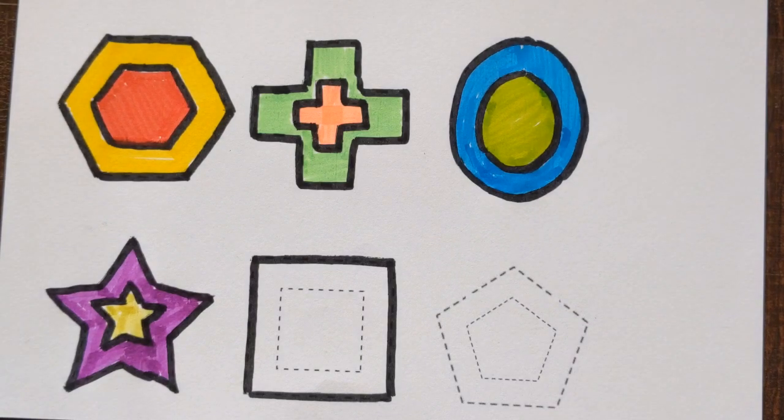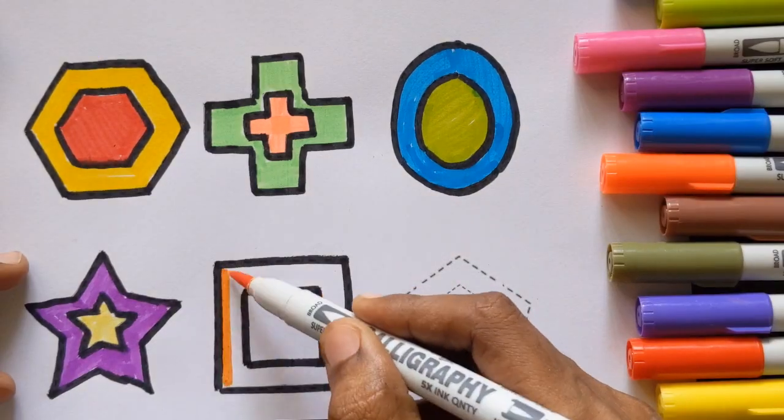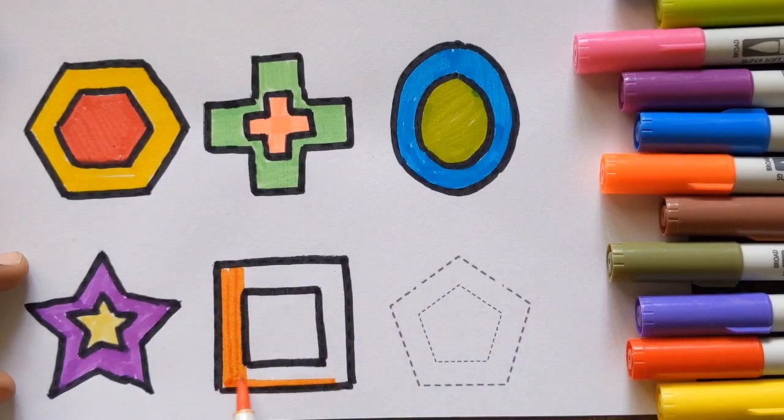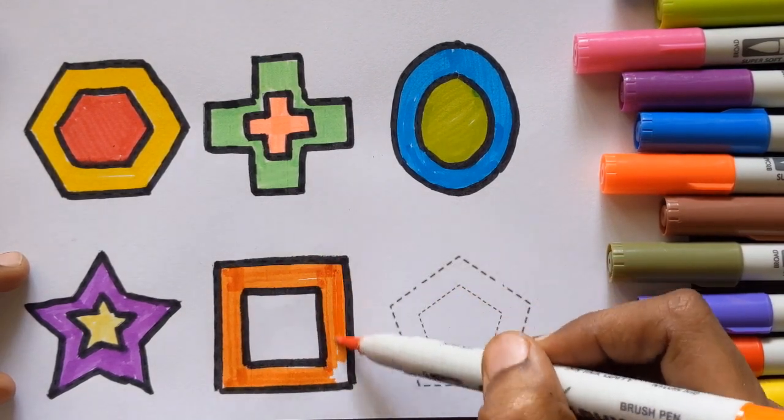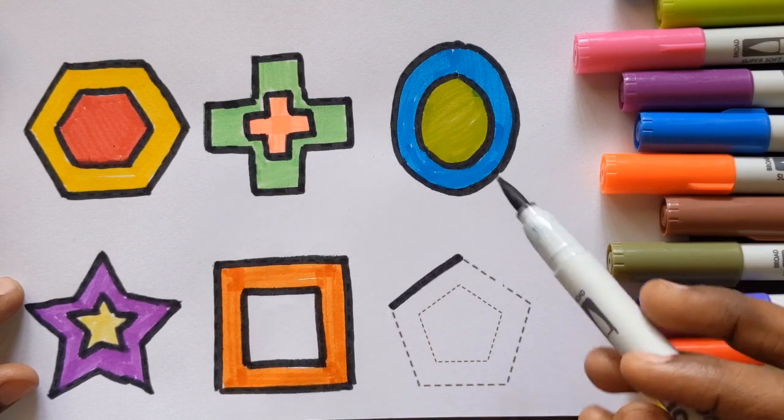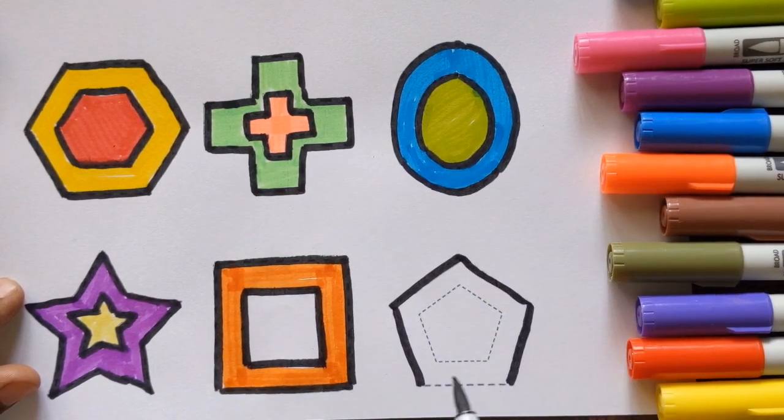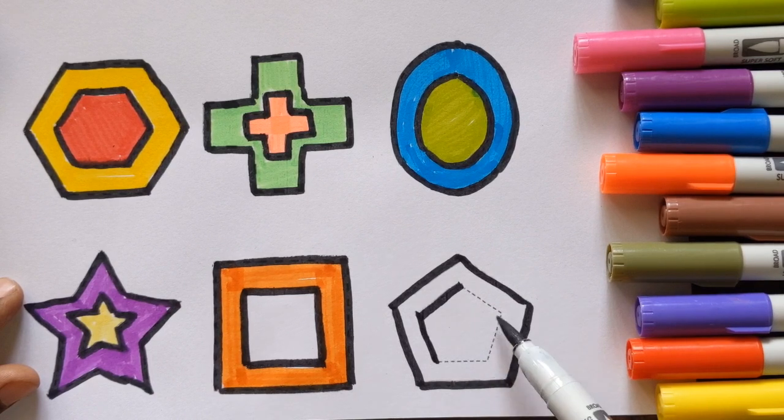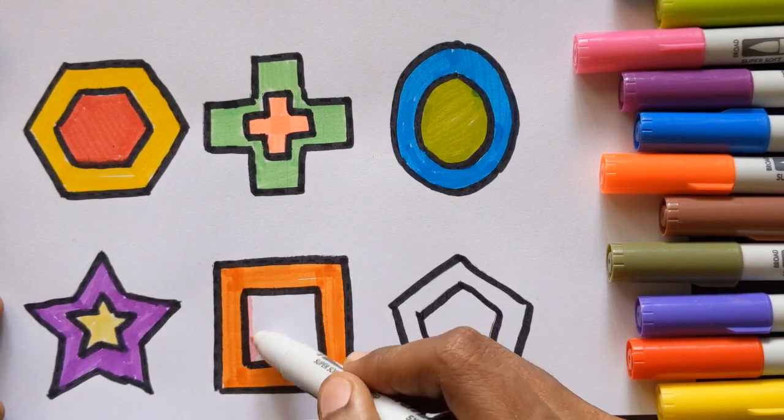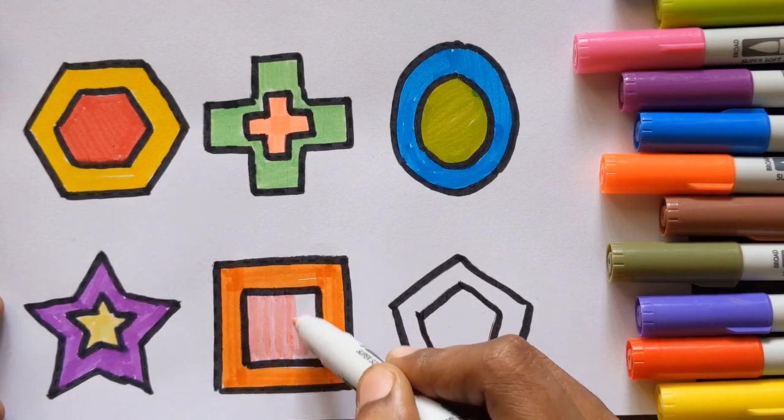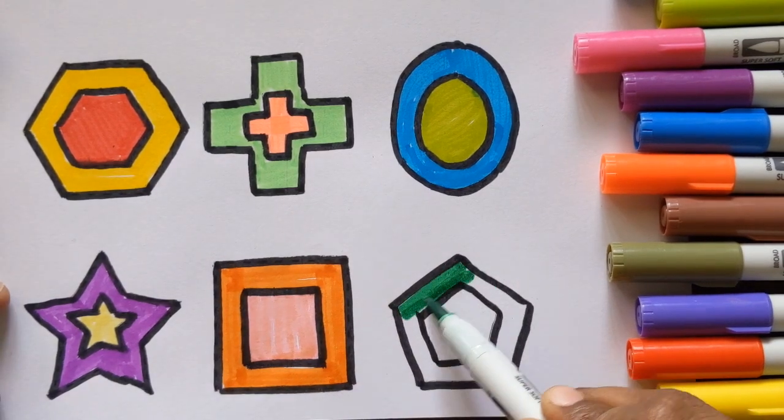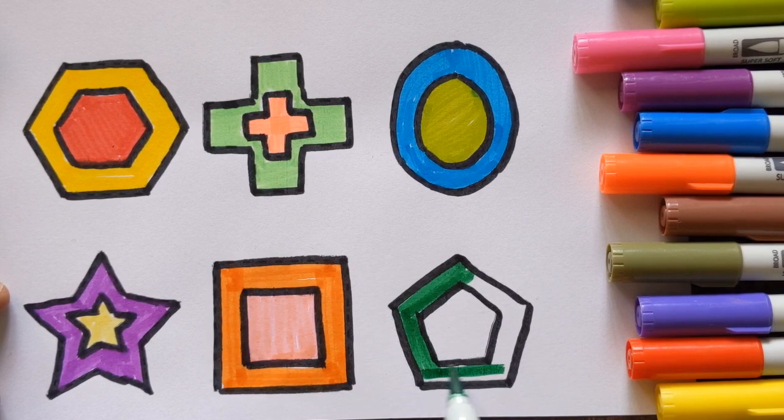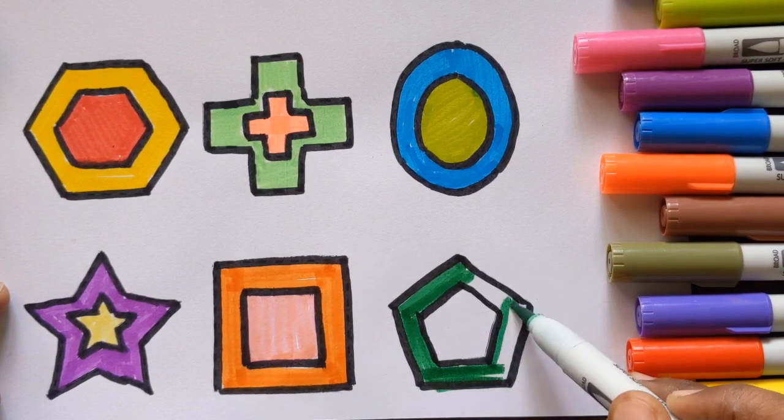Next shape is square. Big square orange color. Pink color pentagon. Small square light pink color. Big pentagon dark green color. Small pentagon yellow color.